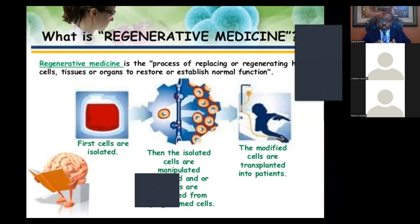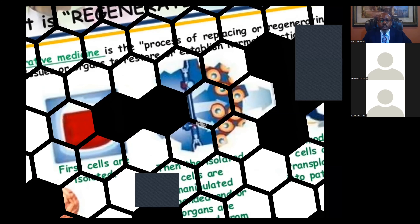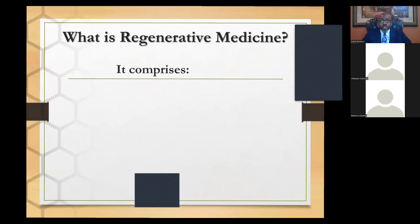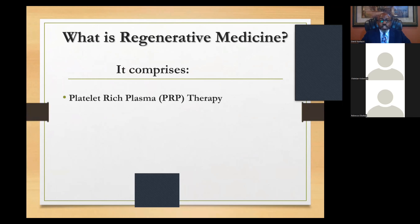Regenerative medicine is the process of replacing, repairing, restoring, or regenerating human cells back to a functioning state, mainly using the cells or tissue of the body. The Mayo Clinic defines it as the area of medicine that has the potential to fully heal damaged organs and tissues, offering solutions and hope for people with conditions that today are beyond repair. It comprises platelet-rich plasma therapy and stem cell therapy.